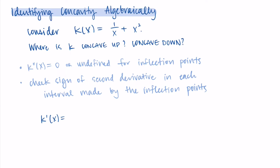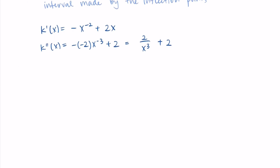To find the derivative, I think of 1/x as x⁻¹. The negative one comes in front and the exponent decreases by one. Same with the second term — the 2 comes in front. Rather than simplifying the first derivative, I go straight to the second derivative. Bringing exponents in front, the derivative of 2x is just 2, and the negative negative two gives a positive two. So k″(x) = 2/x³ + 2.